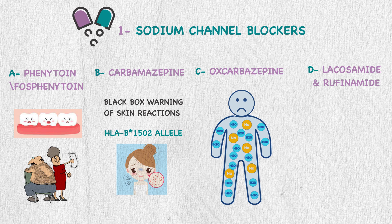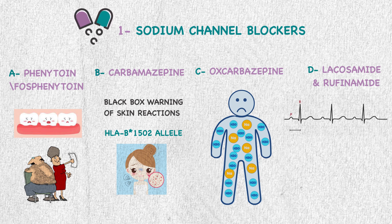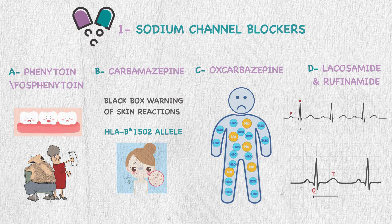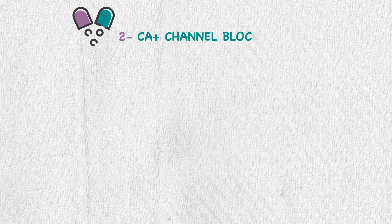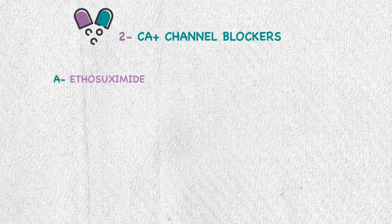Fourth, lacosamide and rufinamide both cause cardiac side effects. Lacosamide is a slow sodium channel blocker and causes prolonged PR interval, while rufinamide is a fast sodium channel blocker and shortens the QT interval. The calcium channel blockers include ethosuximide, which can cause weight loss and blood dyscrasias.